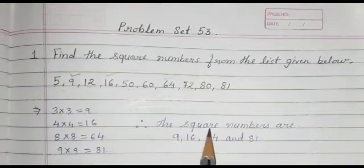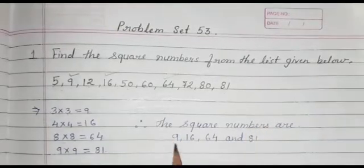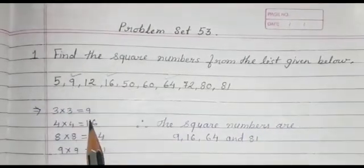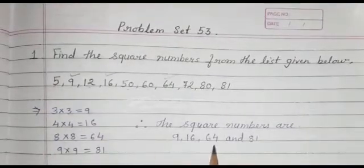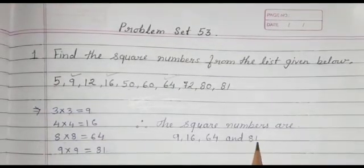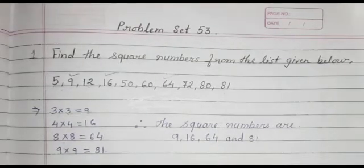Therefore, the square numbers from the list are: 9, 16, 64, and 81.